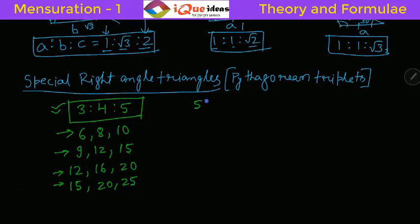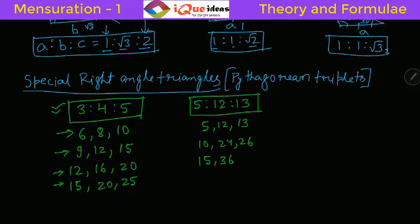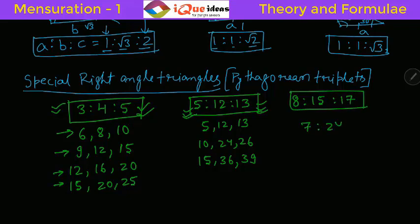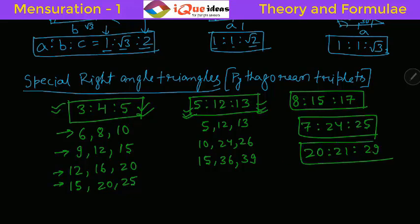Another Pythagorean triplet is 5-12-13, and its multiples such as 10-24-26 and 15-36-39. Other triplets to memorize are 8-15-17 and 7-24-25, and also 20-21-29. For example, if you are given sides 20 and 21 and told it is a right angle triangle, you immediately know the third side is 29 — no calculation needed. That is how these triplets are helpful.